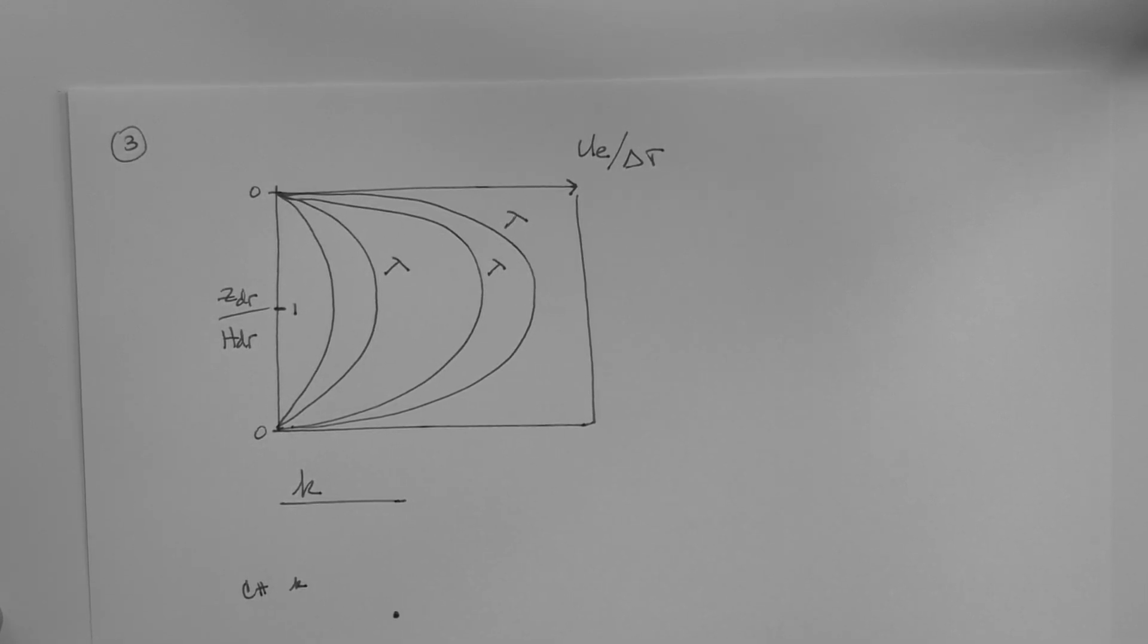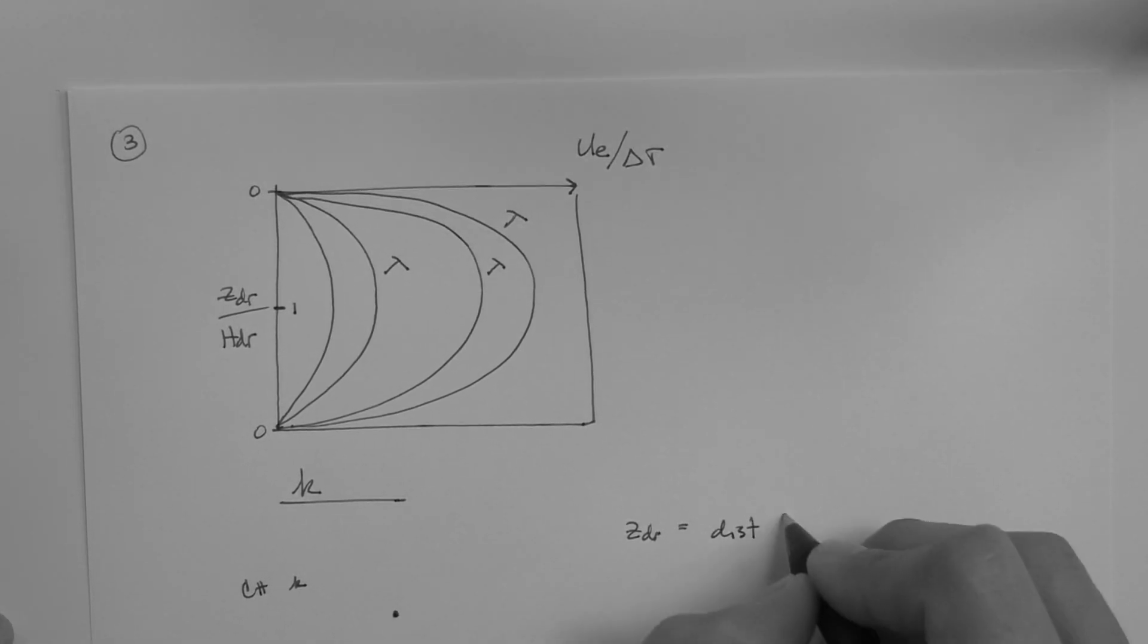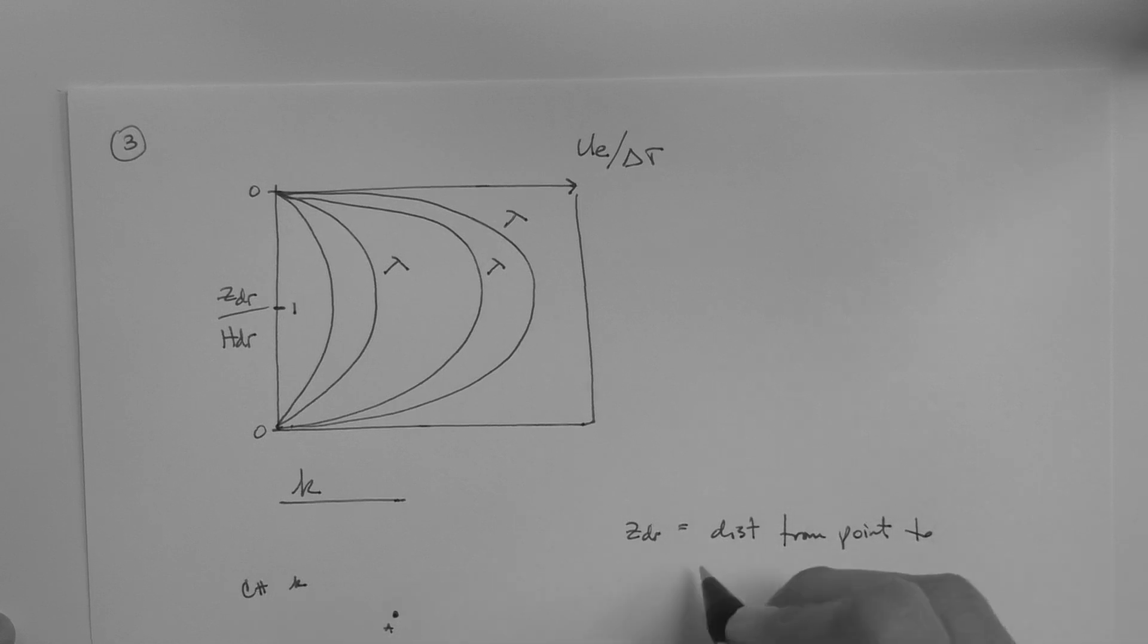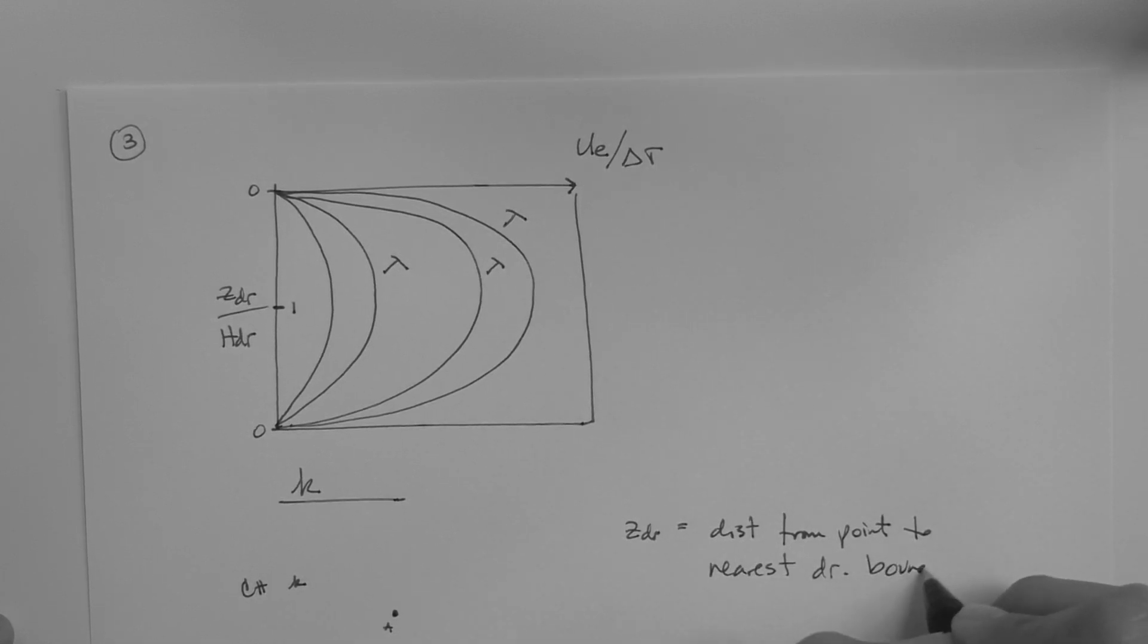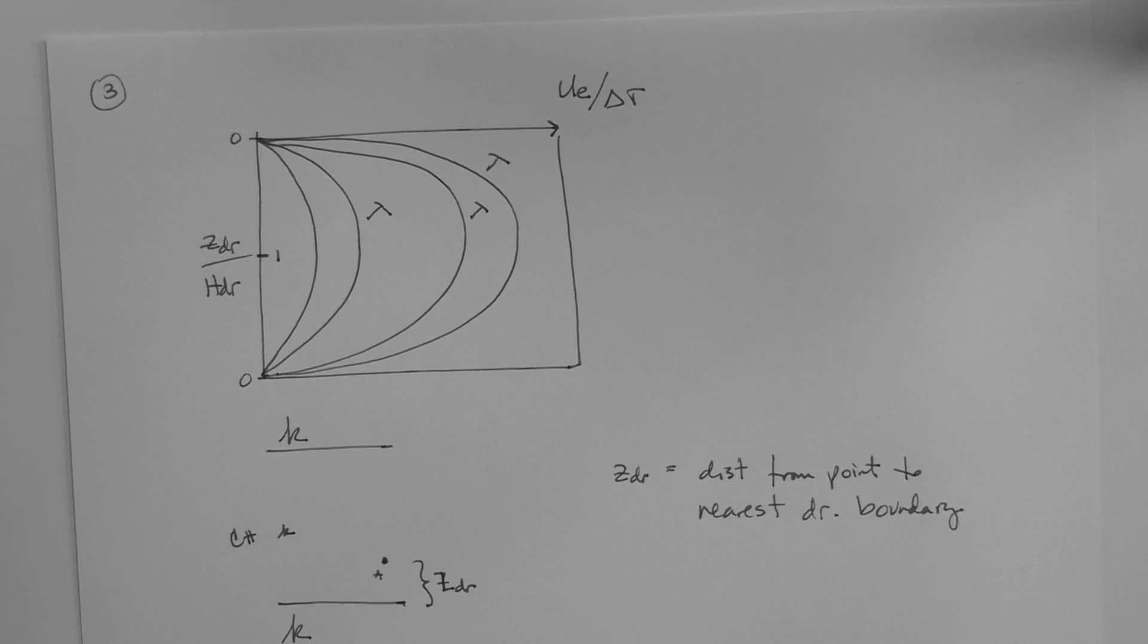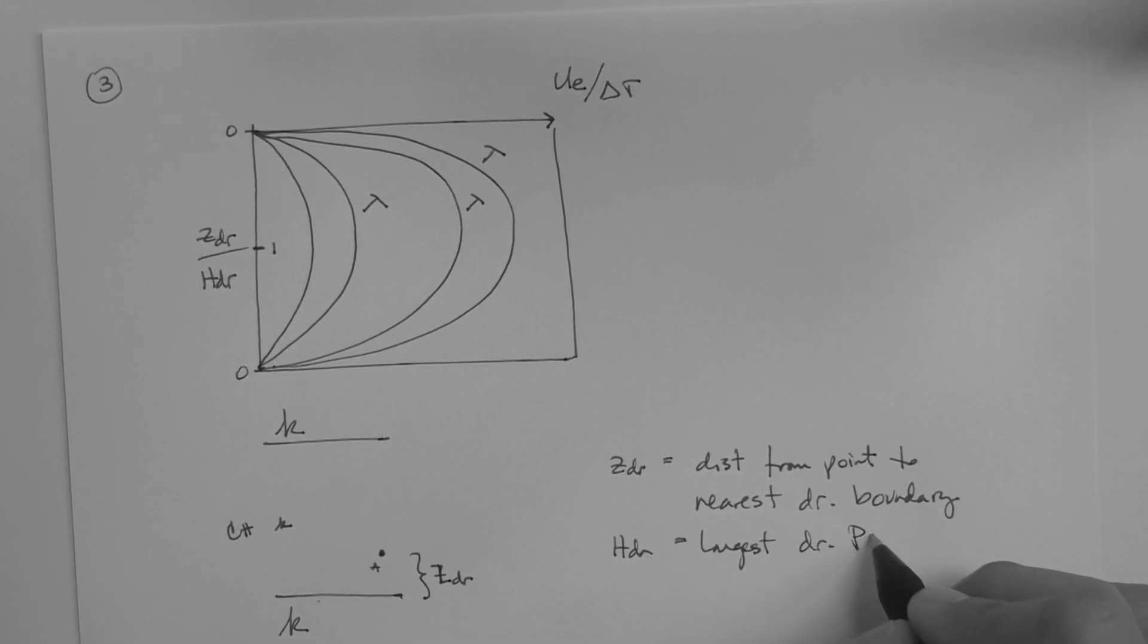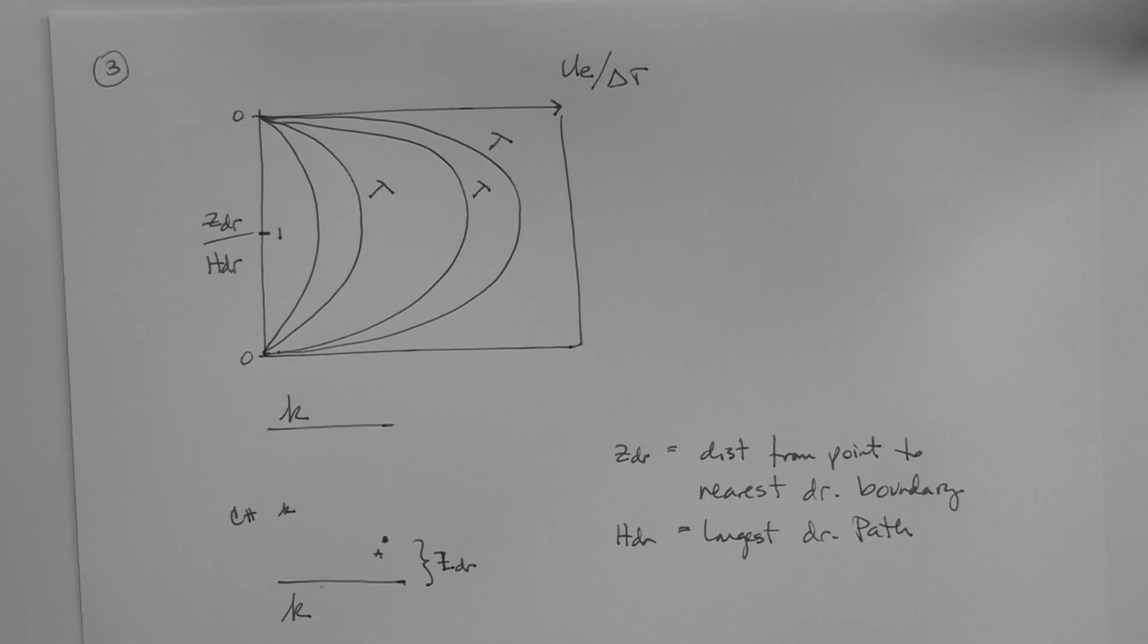So, what are all these parameters? Well, let's redraw our layer. Let's say that our point is right there. ZDR, this is the distance from the point in question, that one, point A, to the nearest drainage boundary. In our case, it's that distance. Why? Because this is the nearest drainage boundary to the point. HDR, longest drainage path. It is independent of the point. The way to determine HDR is to ask yourself, where is the worst place to be?